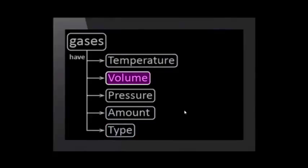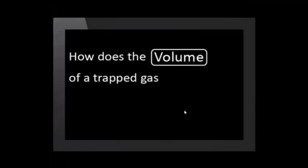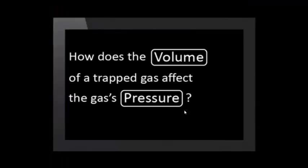So, in this investigation, we control these variables: temperature, amount, and type of gas. We change volume, so volume is our independent variable. And we see what effect this has on pressure, so pressure is our dependent variable.